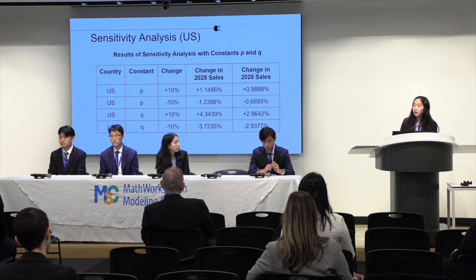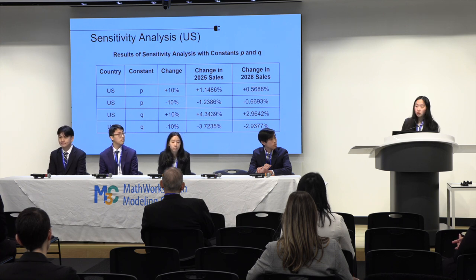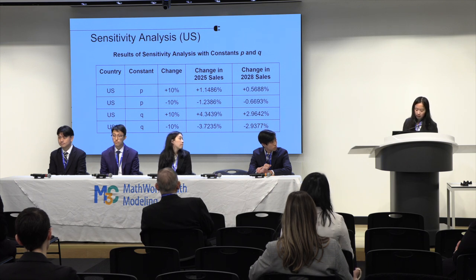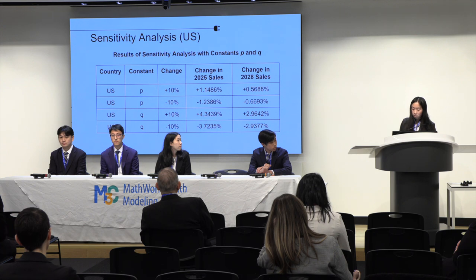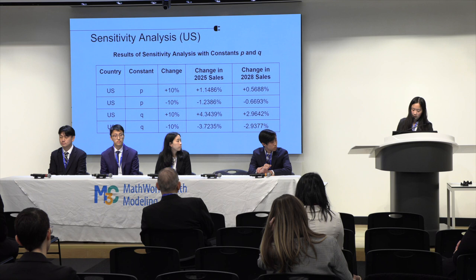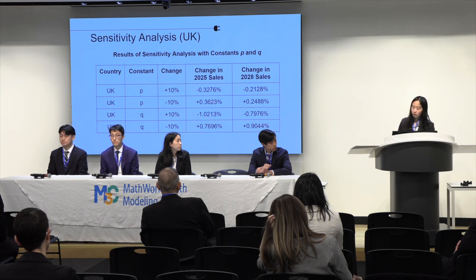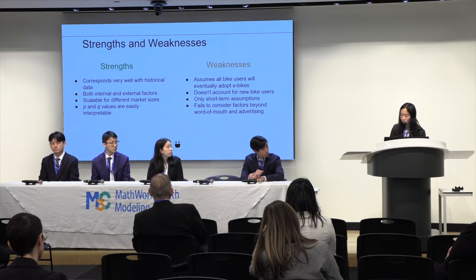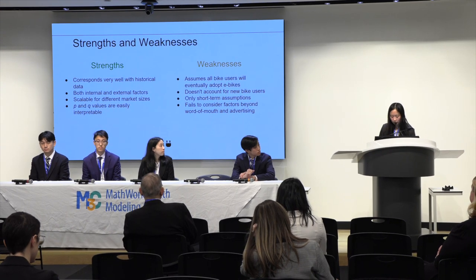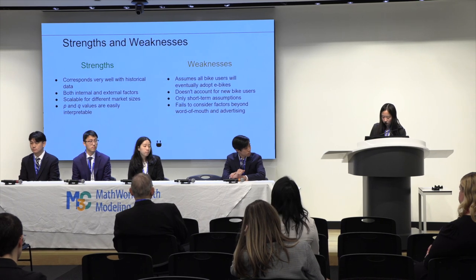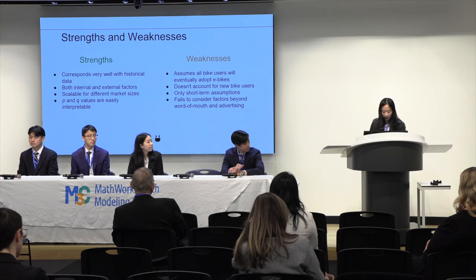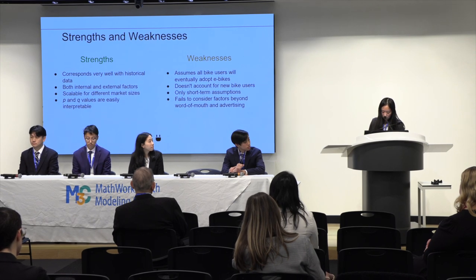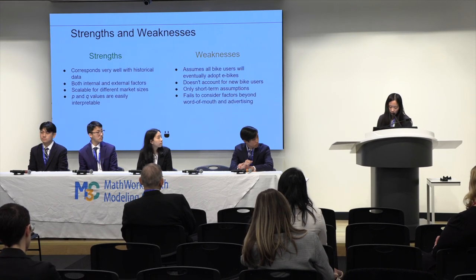Jittering the values of P and Q reveals that our model is resilient to small changes and consistent with intuition. Changes in Q, the imitation coefficient, had a greater effect than changes in P, which makes sense considering the graphs shown earlier. Imitation increases with the number of adopters, while innovation decreases as more of the population adopts the product. Our model corresponds well with historical data and considers both internal factors in Q and external factors in P. However, many of our assumptions are only valid in the short term, making the model unreliable for long-term extrapolation. The P and Q parameters also only consider word of mouth and advertising, and don't consider other factors like social norms and government regulation, which are especially important for green technology like e-bikes.